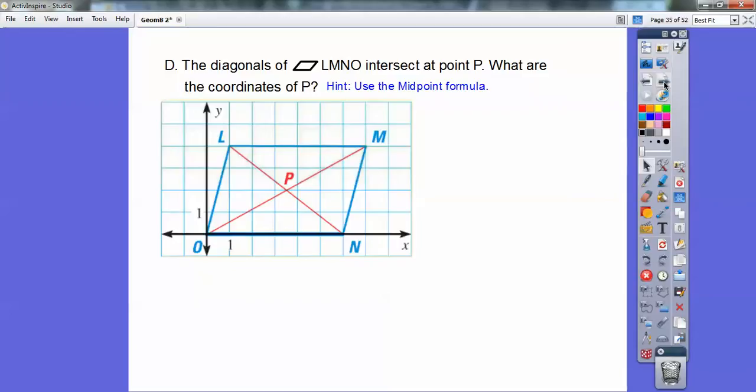So here we have the diagonals of a parallelogram intersect at point P. What's the coordinates of P? And I gave you a hint. You're going to use midpoint formula, and you've just got to find out what are the ordered pairs of M and N, or O and N. So I can either use O and M for midpoints, or L and N. So here's all the coordinates of all those guys right there. There's the midpoint formula. Don't forget that.